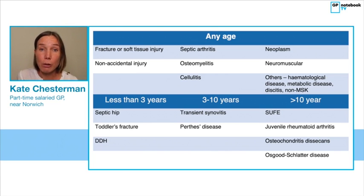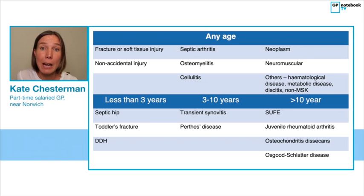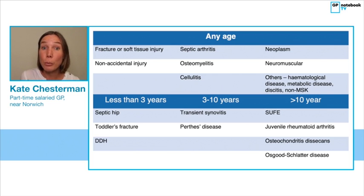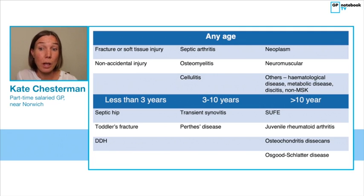In the older age group, other considerations might be a slipped upper femoral epiphysis, which we'll talk more about shortly. Juvenile rheumatoid arthritis may also present at this age. Also think about osteochondritis dissecans, where a small piece of subchondral bone begins to separate from its surrounding area due to a disturbance in the blood supply — this can lead to joint pain and is a common cause of loose body within the joint space, particularly in children between ages 10 and 19. Osgood-Schlatter's disease is an overuse injury caused by multiple small avulsion fractures around the tibial tuberosity — a self-limiting disorder causing anterior knee pain during adolescence that may cause children to limp.